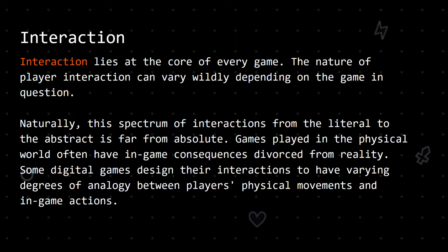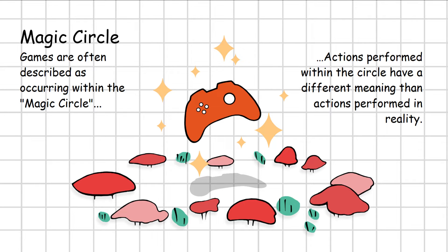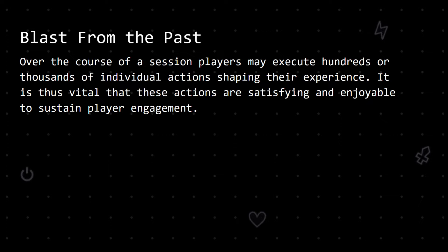Naturally, the spectrum of interactions from the literal to the abstract is far from absolute. Games played in the physical world often have in-game consequences divorced from reality. Some digital games design their interactions to have varying degrees of analogy between players' physical movements and in-game actions. This is why games are often described as occurring within the magic circle — the game space is separate from reality. The very same action occurring inside the magic circle has a very different meaning when performed outside it. Over the course of a session, players may execute hundreds or thousands of individual actions shaping their experience. It is thus vital that these actions are satisfying and enjoyable to sustain player engagement. A sufficiently well-designed interaction can keep players coming back again and again after hundreds of hours of play. Conversely, a slight imperfection in the look or feel of an action might make players feel frustrated after just a few hours.